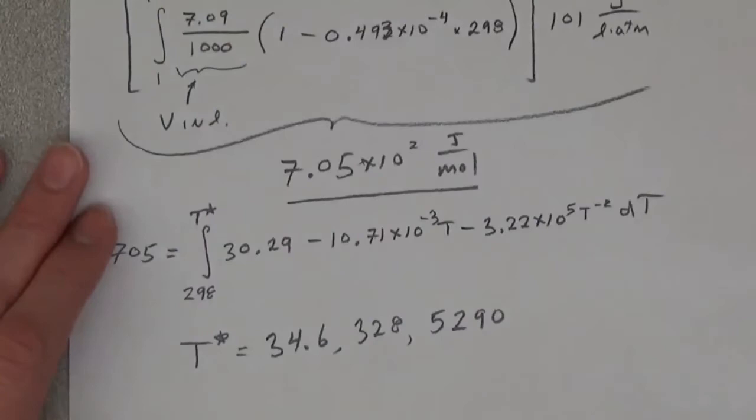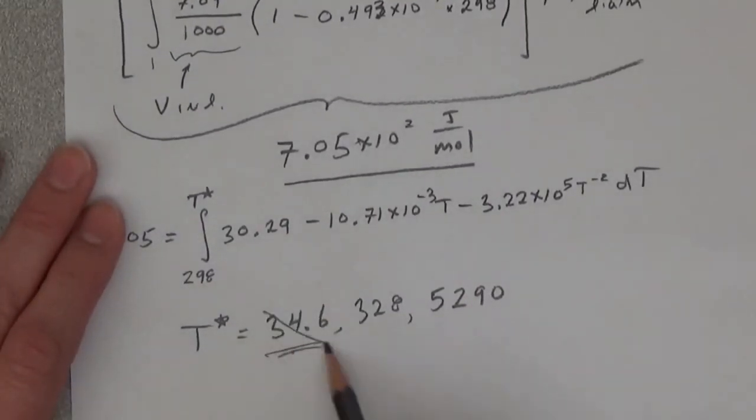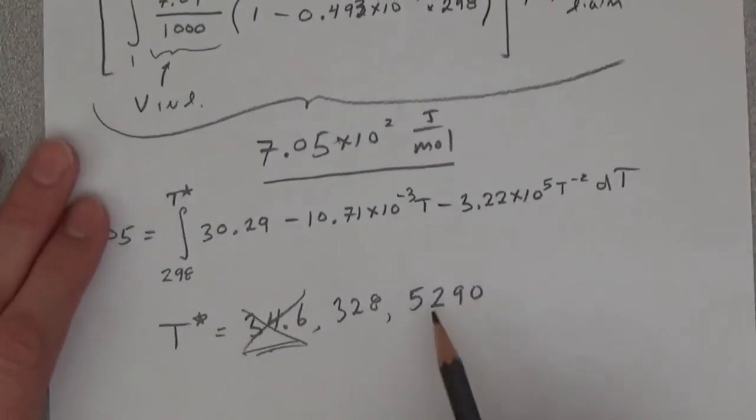Well, we know that we have to put energy into the system, so it can't be decreasing the temperature. This 5,290 is about the melting temperature.